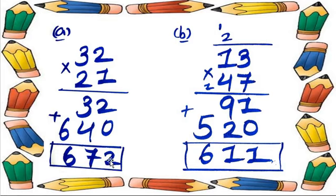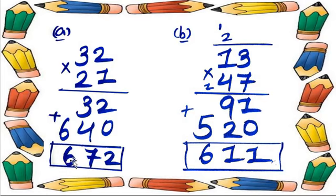Now step 3 is addition. 2 plus 0 equals 2. Then 3 plus 4 equals 7. Then 6 as it is. So the answer is 672. 32 multiplied by 21 is equal to 672.